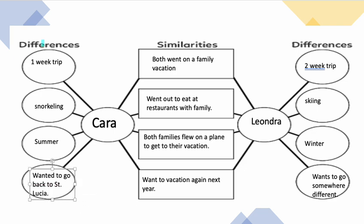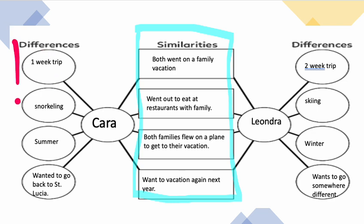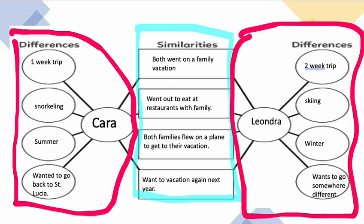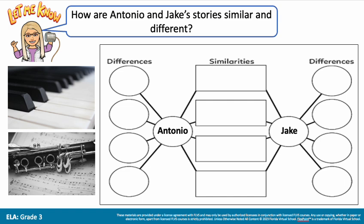This is how we do our comparison, third grade. We look for things that were the same between both stories, but then we find things that were different — things particular just to Kara's family and things particular just to Leandra's family. Now we're going to look at two individuals named Antonio and Jake. We're going to look for similarities and differences between both of their stories. It looks like both have instruments — one may be playing piano, the other a flute.